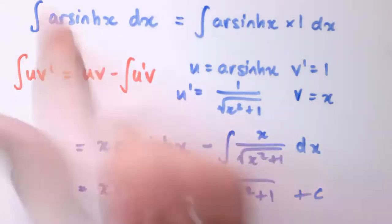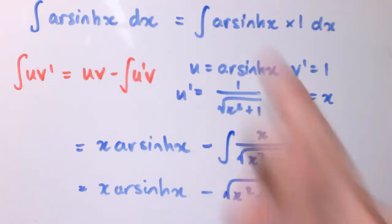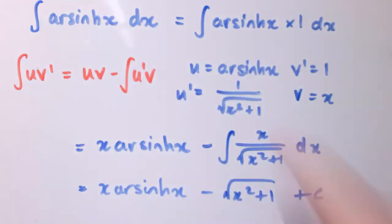That would also work if I replaced arcsinh with arcosh or arctanh, or with the trig functions as well: arcsine, arccosine, and arctan. Just apply the same method, write it as the function times 1, do the integration by parts, and you'll find in all those cases you can integrate the resulting integral without too much trouble. I'll leave those ones for you to do as well.